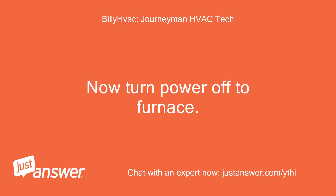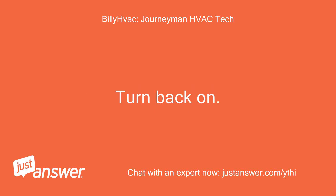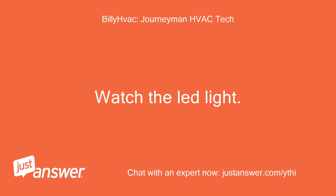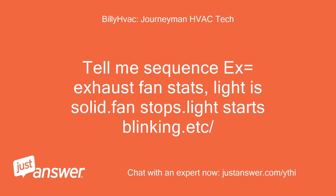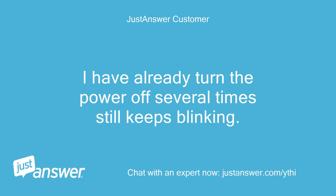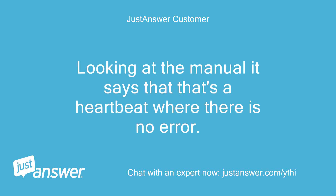Now turn the power off to the furnace, then turn it back on. Watch the LED light and tell me the sequence — for example, exhaust fan starts, light is solid, fan stops, light starts blinking, etc. I have already turned the power off several times and it still keeps blinking. Looking at the manual, it says that is a heartbeat, meaning there is no error.